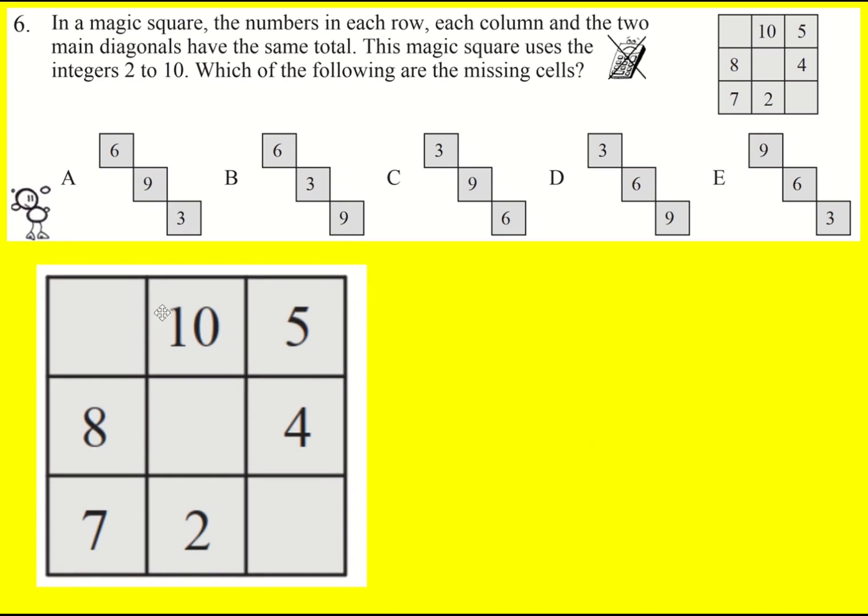When I did it, I just started summing the pairs that we have. So here I've got 15. Here I've got 12. So that means whatever goes here is going to have to be three more than whatever goes here.